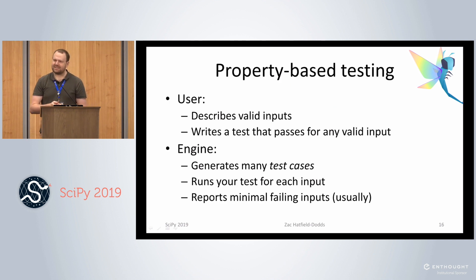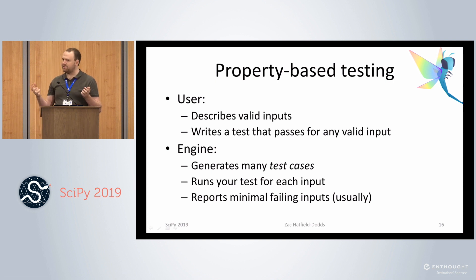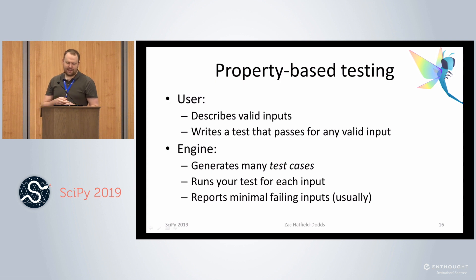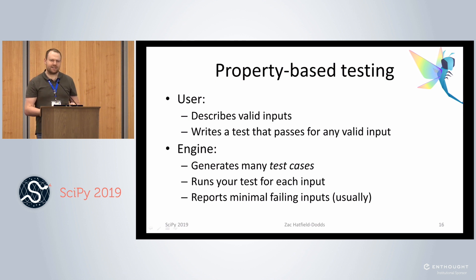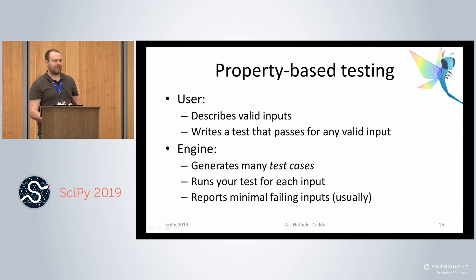In property-based testing, instead of a human having to come up with an example, running the code, and comparing it to an exact output, the user describes what kind of inputs should be valid — any pair of numbers, an array of a particular shape, a data frame. You hand it over to the Hypothesis engine, which generates many examples of pseudo-random data, runs your test case on each, and if it finds an error — if the function raises an exception — Hypothesis reports a minimal failing example to you. That makes debugging a lot easier.